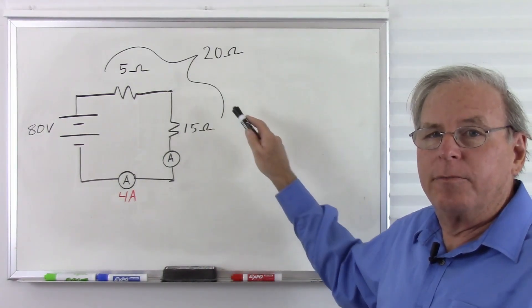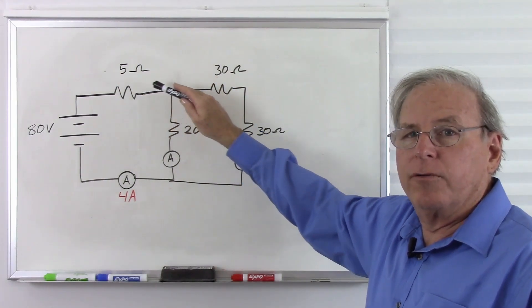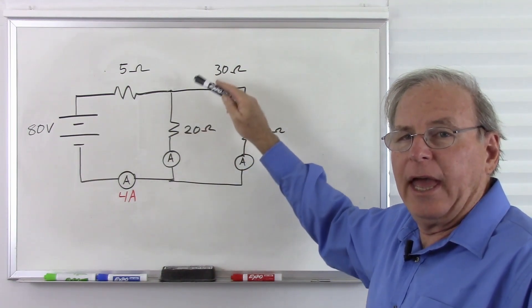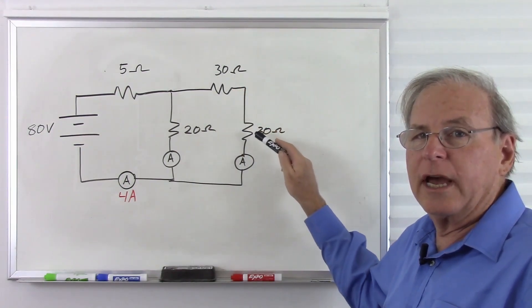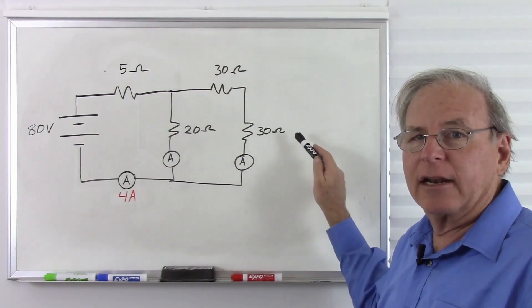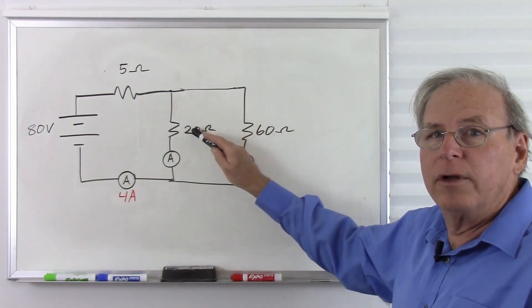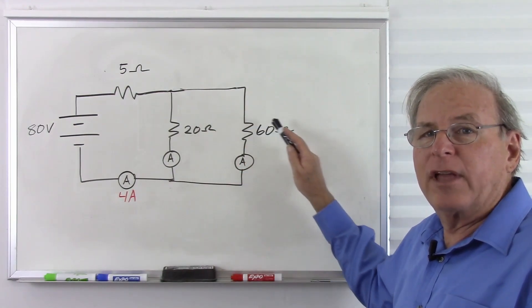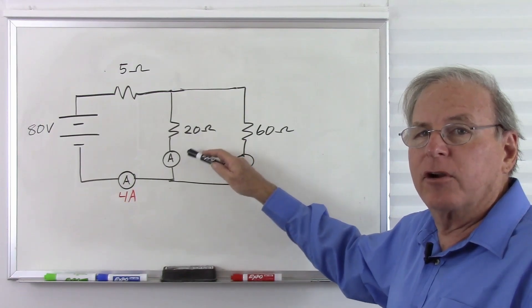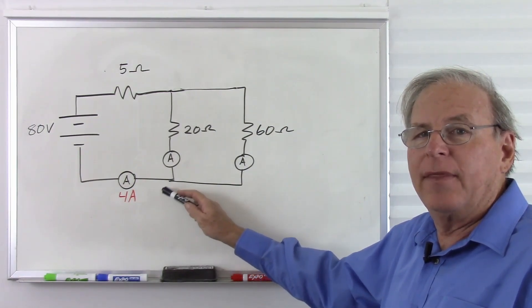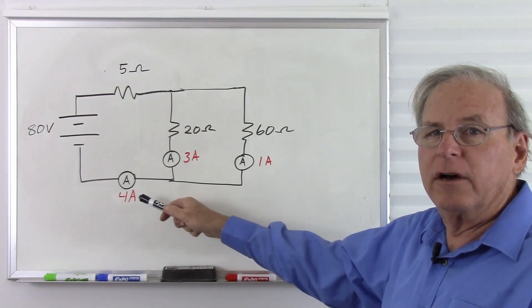Zooming back in to the original circuit, we have 4 amps going through the first resistor, which then splits two ways before recombining. The two 30 ohm resistors in series act like 60 ohms, giving us 20 ohms in parallel with 60 ohms — a 3 to 1 resistance ratio. So the 20 ohm branch carries 3 times the current of the 60 ohm branch. That means 3 amps through the 20 ohm resistor and 1 amp through the 60 ohm resistor, totaling 4 amps.